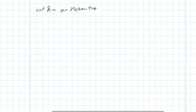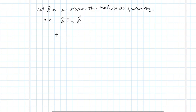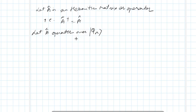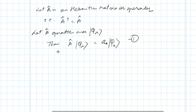Let's say the Hermitian matrix A is an n-by-n Hermitian matrix or operator, which means A-dagger is equal to A. Let this operator A act on phi_n, its eigenvector. When it operates on phi_n, it gives eigenvalue a_n. Let me call this equation number one, where phi_n is an eigenvector.